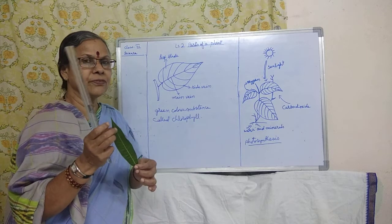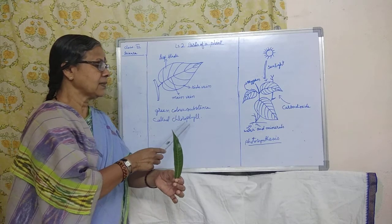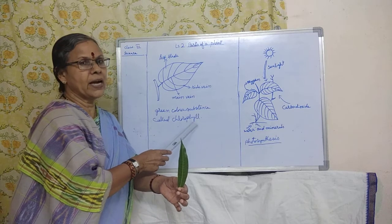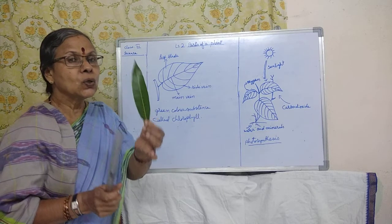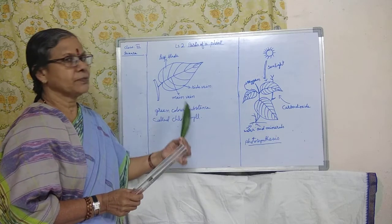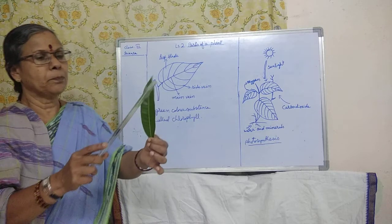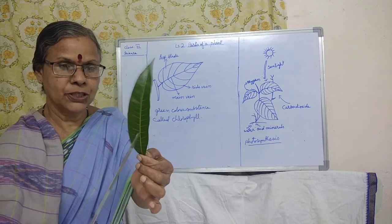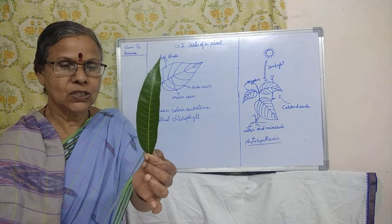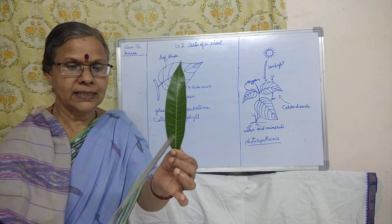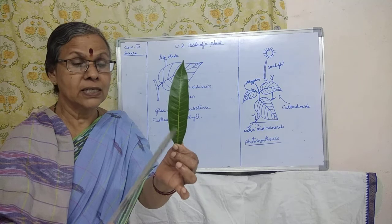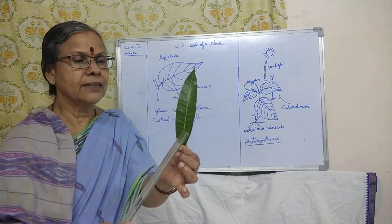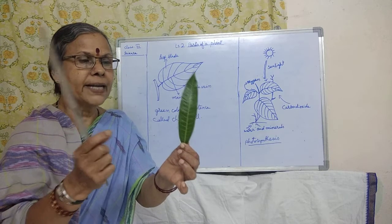The green color substance present in the leaf is called chlorophyll — C-H-L-O-R-O-P-H-Y-L-L. Once again: the flat part is called the leaf blade. The main tube running in the middle is called the main vein. The side veins are attached to the main vein and they carry water to all parts of the leaf. That is why if you pinch or break it you will find wetness inside the leaf.